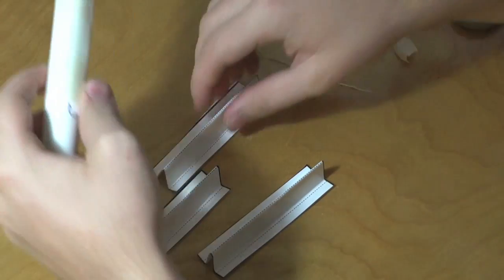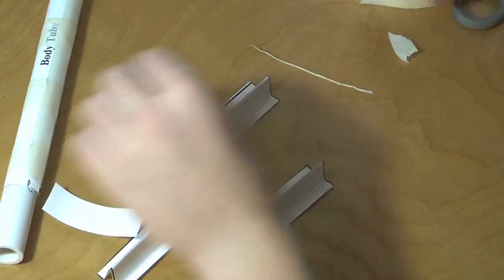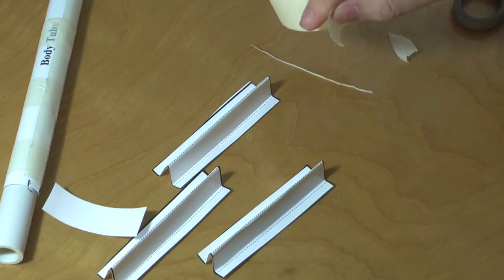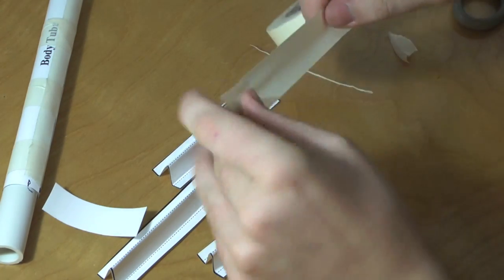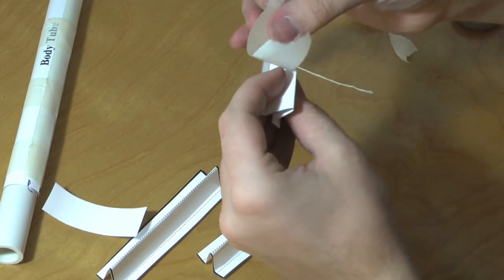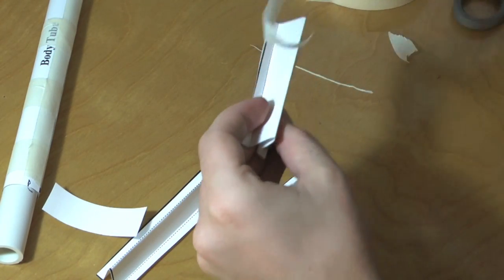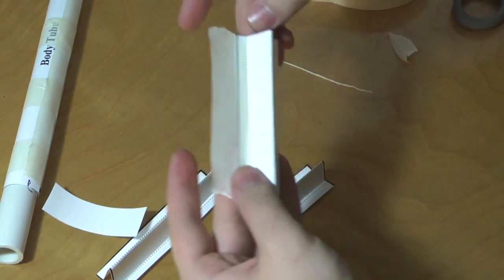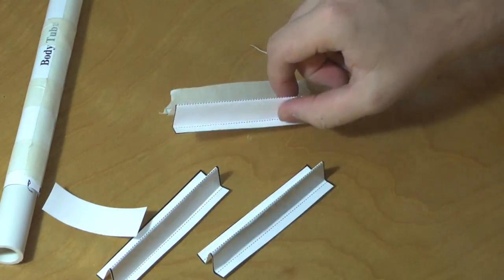Okay, now that you have all your fins, now it's time to put them onto the rocket. So I'll show you how to do the first one and then I'll get the other ones done. You want to put a piece of tape on one of the sides to start off. So you have it on the side like that, and then you want to put another piece of tape on the other side.